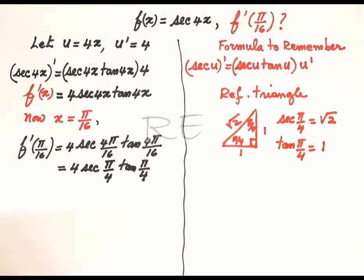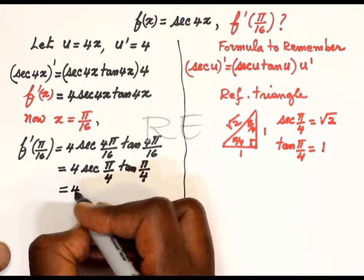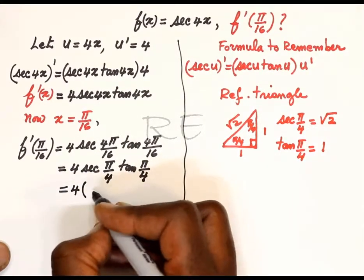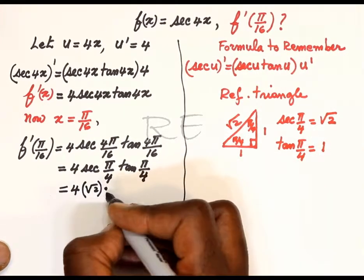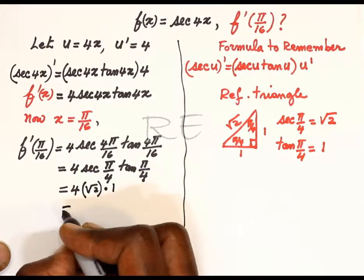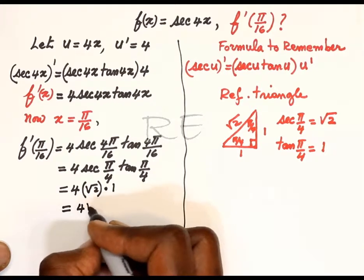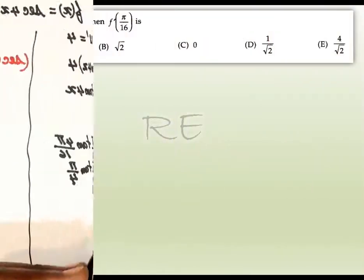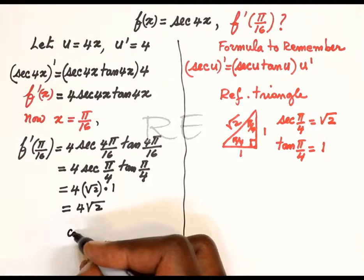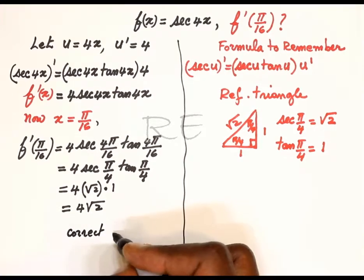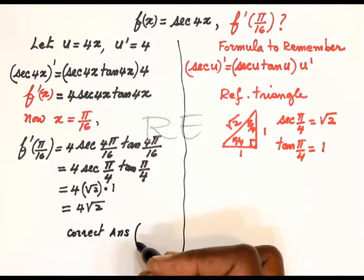Going back to the derivative, we'll just substitute. It's going to be four times square root of two multiplied by one, which is four square root of two. Looking over, the correct answer is four square root of two, and our job is done. Bye.